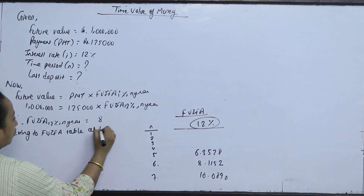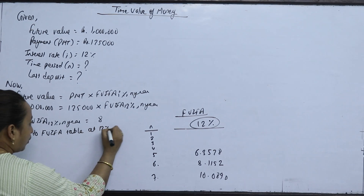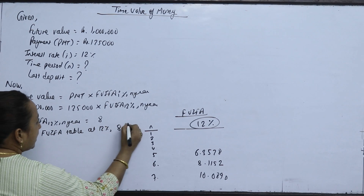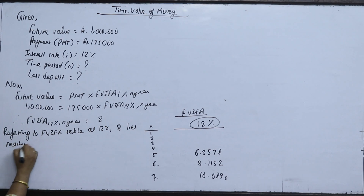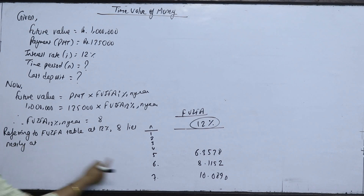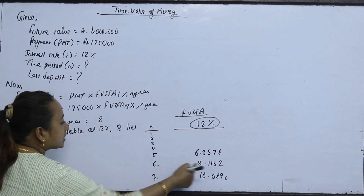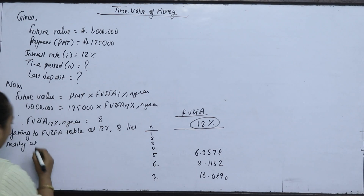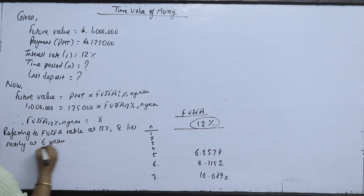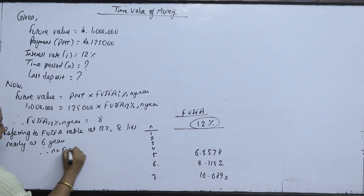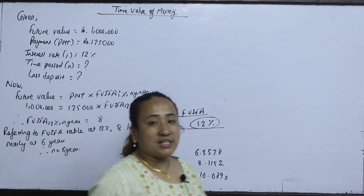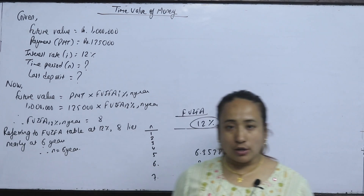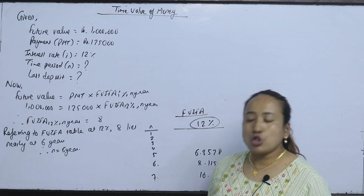Referring to the FVIFA table at 20 percent, the value lies nearly at 6 years. So approximately 6 years.